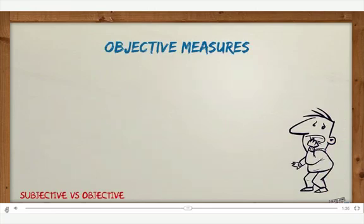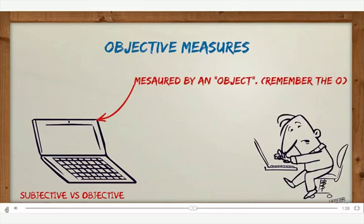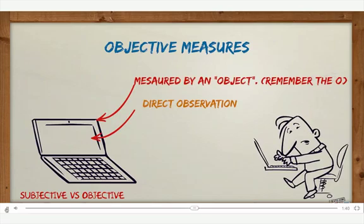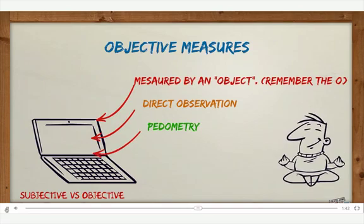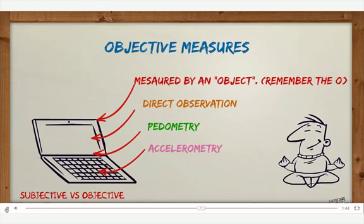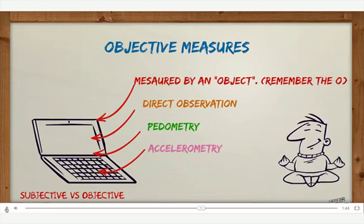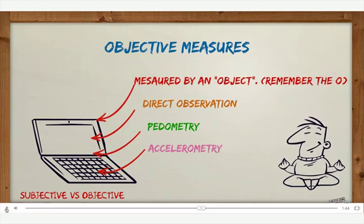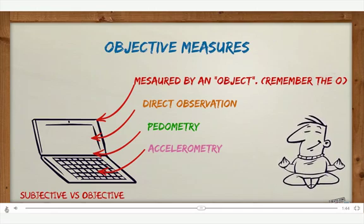Now let's look at some objective measures. These are measured by an object — remember the O is for objective. There are three main objective measures: direct observation, pedometry, and accelerometry.